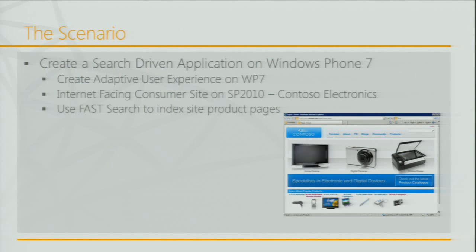To set the scenario: we're going to create an adaptive user experience application on Windows Phone 7. We'll be browsing a Contoso Electronics site powered on SharePoint 2010. We're going to use FAST search to index the content on SharePoint 2010 and expose it out to our phone.